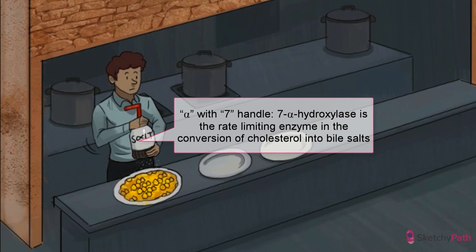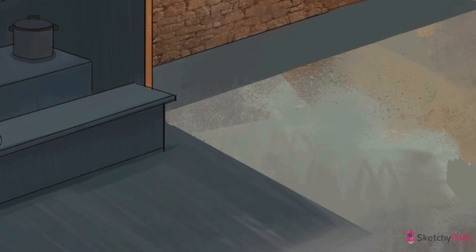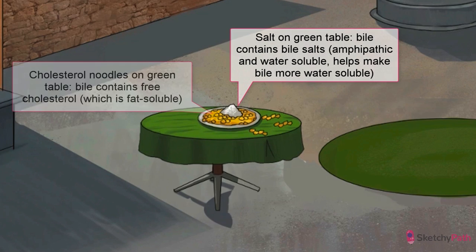A small amount of cholesterol is removed from the body as a component of bile. Some of this cholesterol takes the form of bile salts, an amphipathic form of cholesterol that aids fat digestion in the GI tract. Cholesterol is converted to bile salts in the liver via the enzyme 7-alpha-hydroxylase — see the alpha we snuck into the word 'salt,' along with that 7-shaped salt grinder handle. This is the rate-limiting enzyme. The liver excretes both bile salts and free cholesterol into the bile, and both end up in the gallbladder.